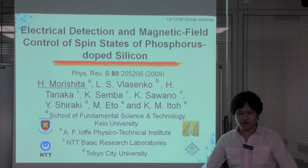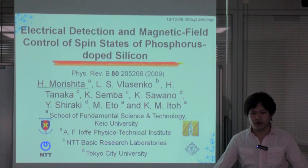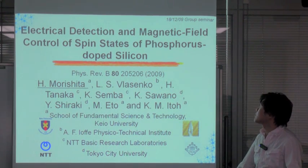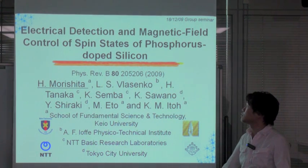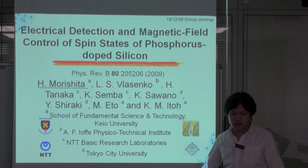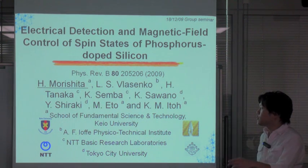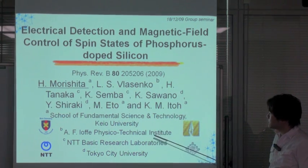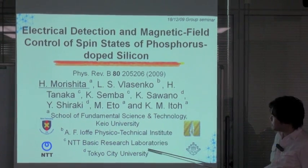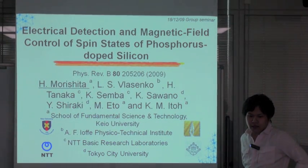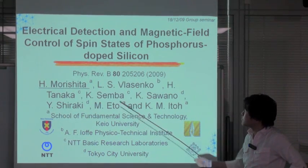Thank you and good morning everyone. Today I'd like to give a talk on electrical detection and magnetic field control of spin state of phosphorous-doped silicon. I'm Hiroki Morishita, PhD candidate in the Ito Group at Keio University. This work has been done in collaboration with Yofei Physical-Technical Institute, NTT Basic Research Laboratories, and Tokyo City University. This result is published in this paper.